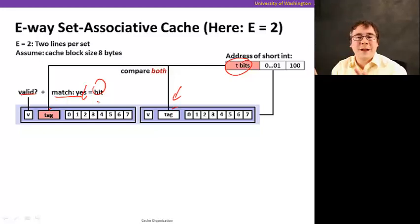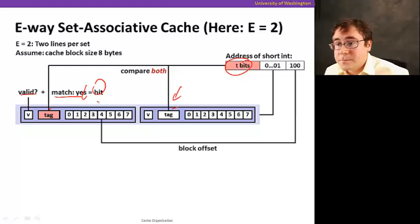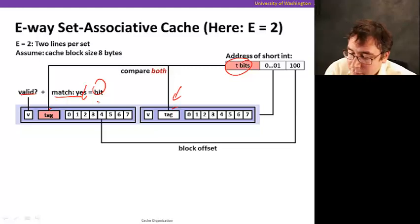If either one of them is valid and has a match, then we have a hit. It should be a match in only one of them. But if both of them have a miss, they either don't match or the valid bit is set to 0, then it's a cache miss.